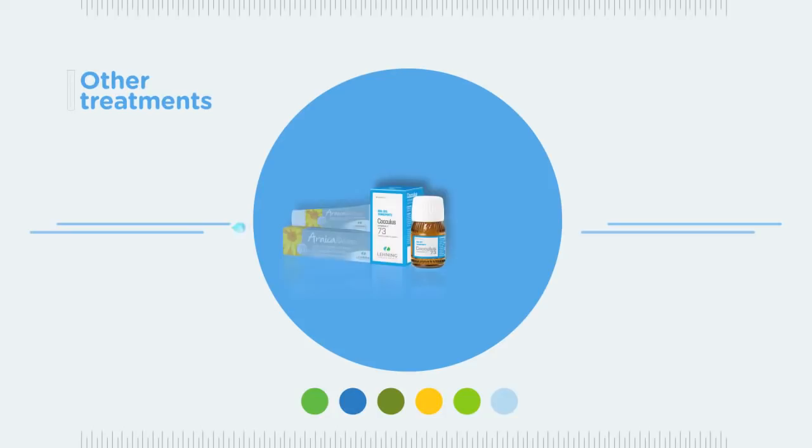In addition to these five main categories of natural medicines, Lenning Laboratories offer a number of other treatments to help alleviate everyday ailments available in tablet or dissolvable forms, capsules, syrups or drops.